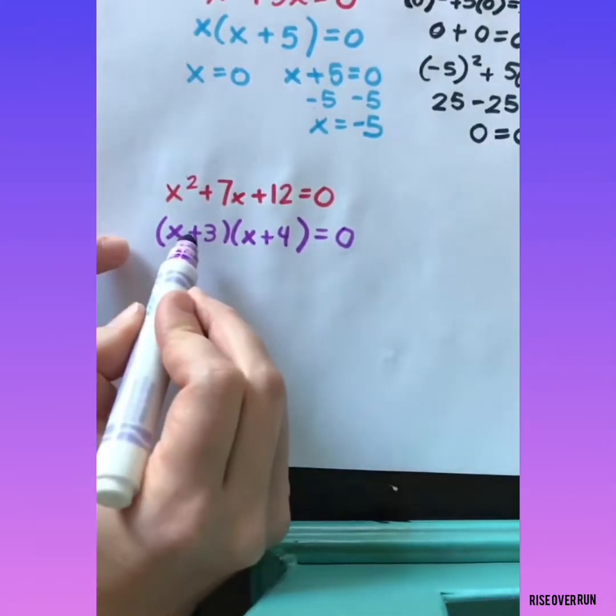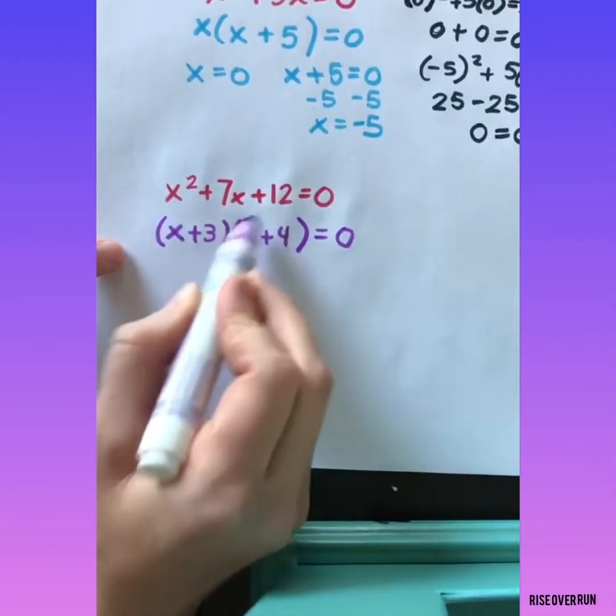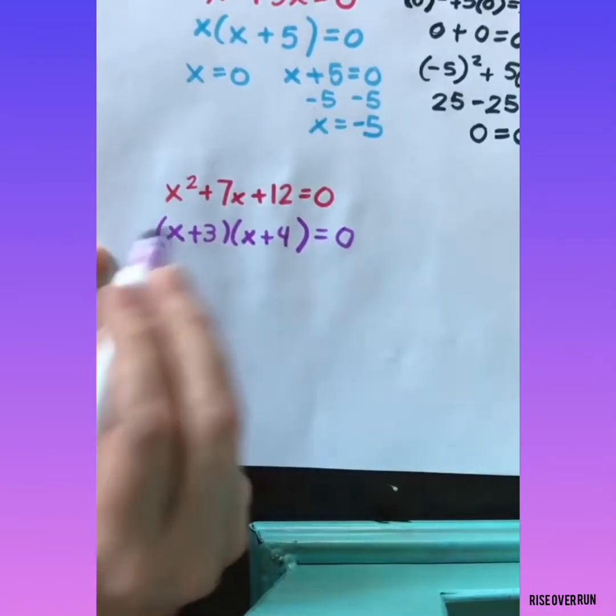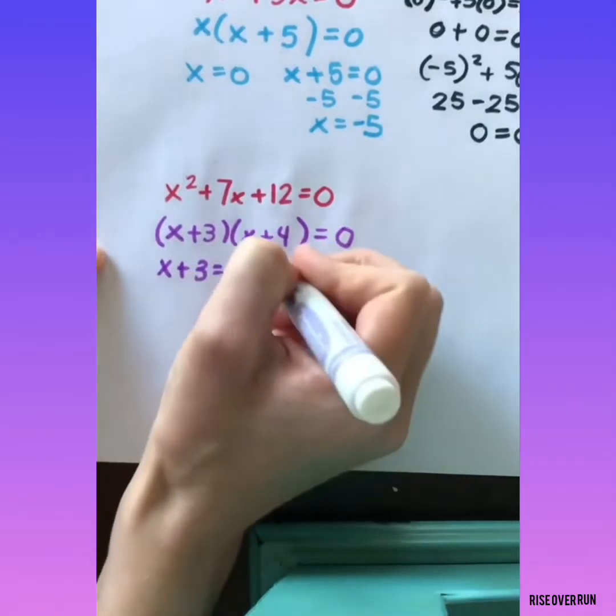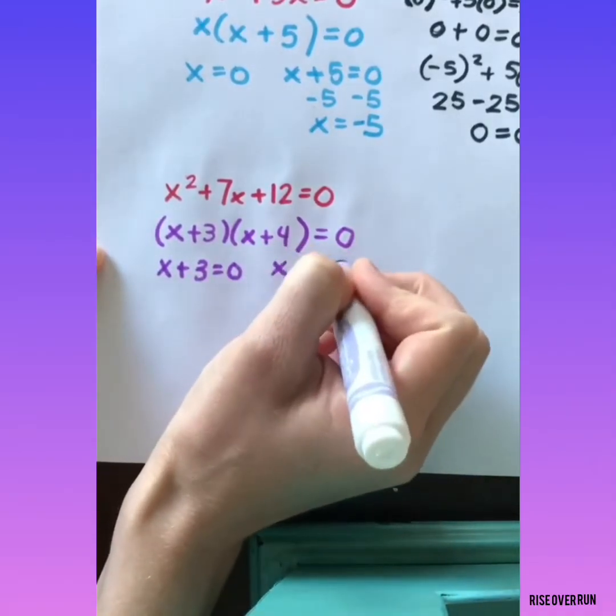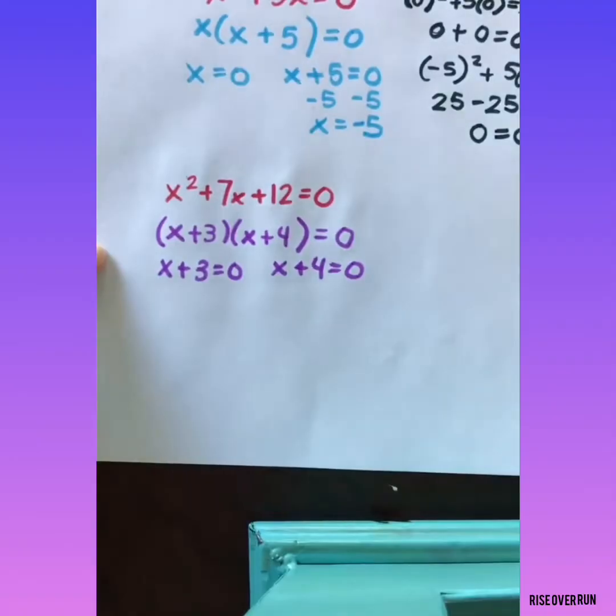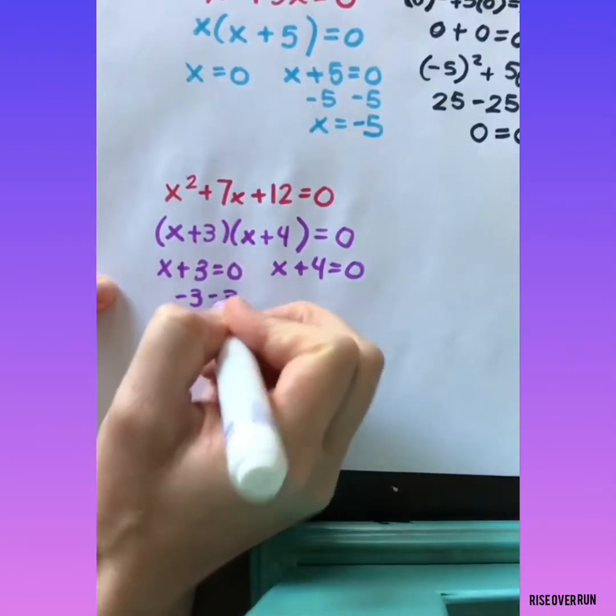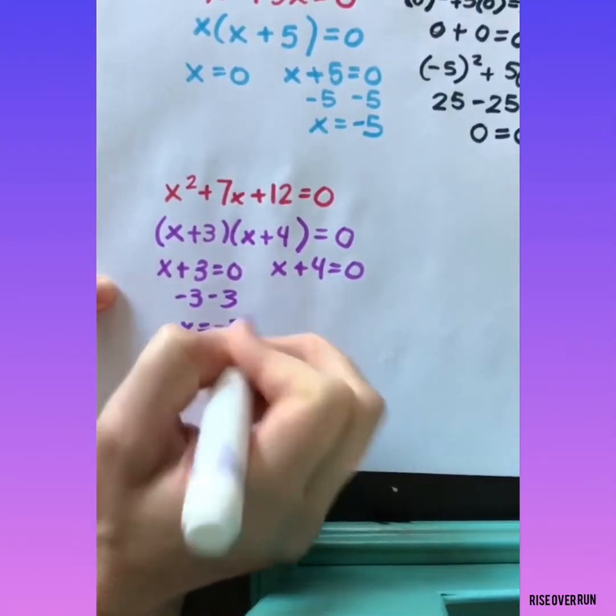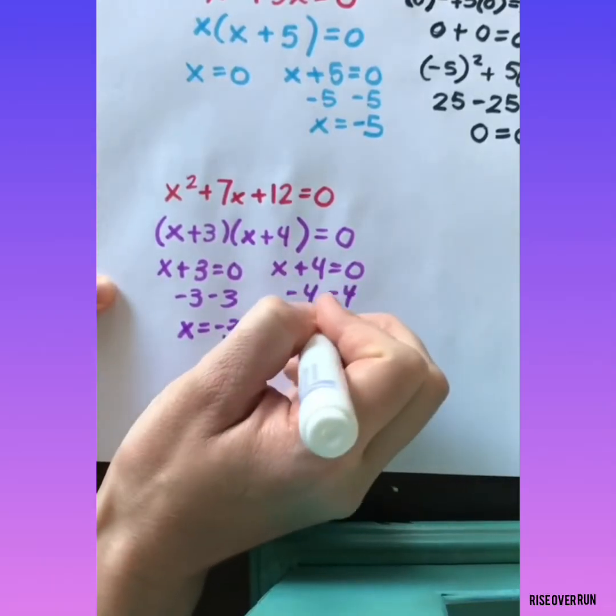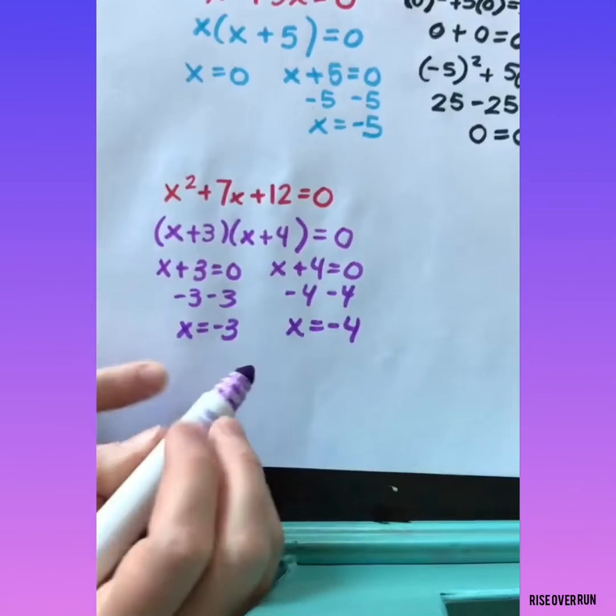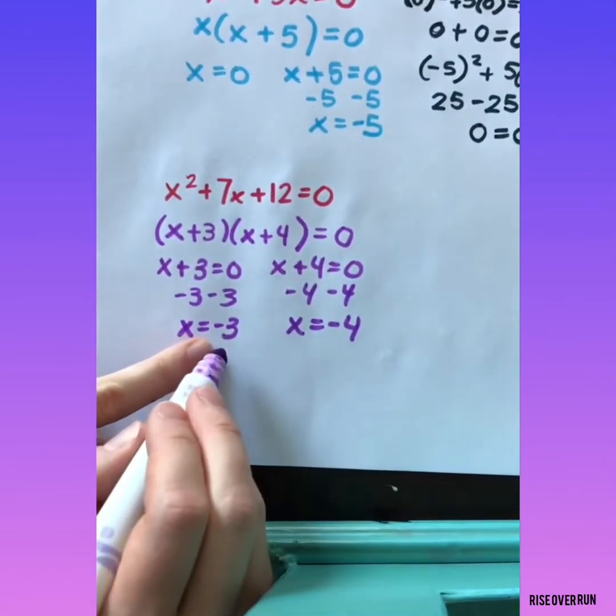Now I know that either this or this factor must equal 0. So I'm going to solve each one by setting it equal to 0. x could equal negative 3 or negative 4. These are the solutions, negative 3 and negative 4.